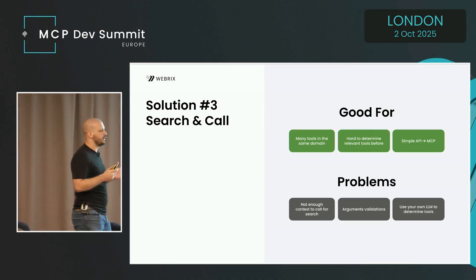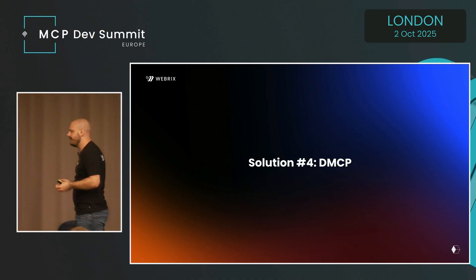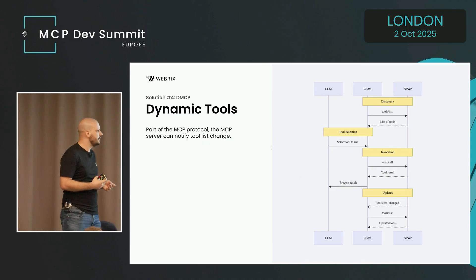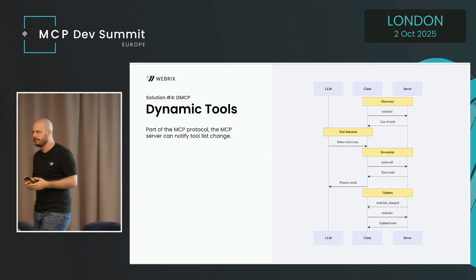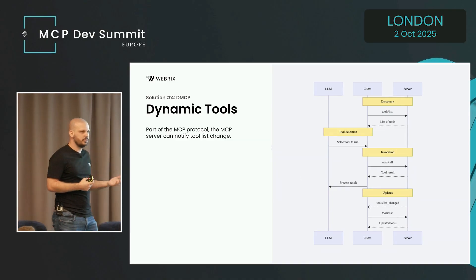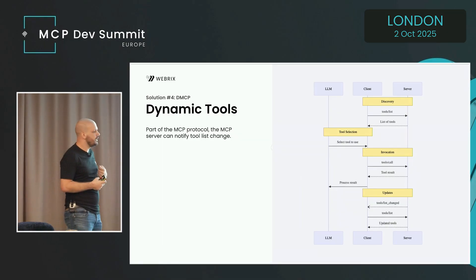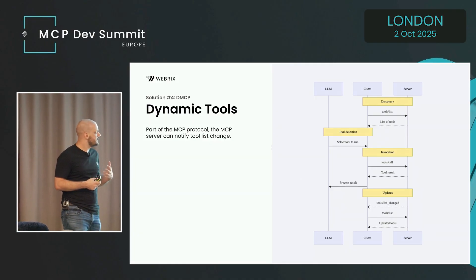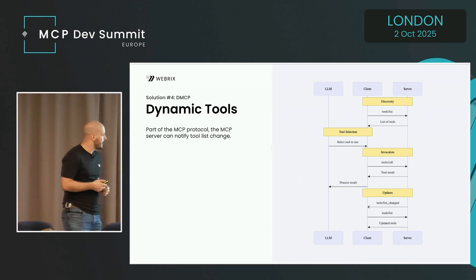The fourth solution is DMCP — Dynamic MCP. First, let's talk about a part of the MCP protocol that isn't widely known: dynamic tools. It's the ability to tell the MCP client that something changed in the tools, prompting it to call list-tools again. During the discovery phase, when the MCP server runs, the client gets the list of tools. After a tool selection or other interaction, the server can send a notification saying the tool list has changed, triggering the client to fetch the updated list.